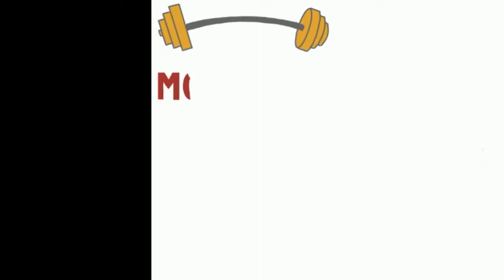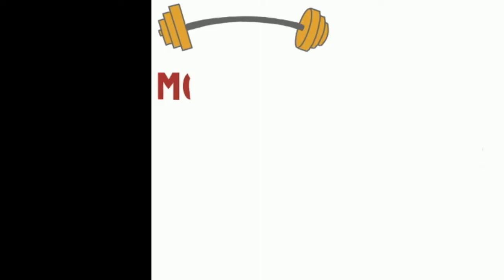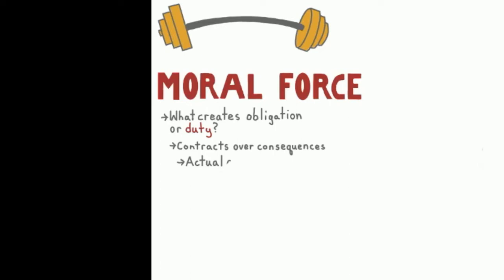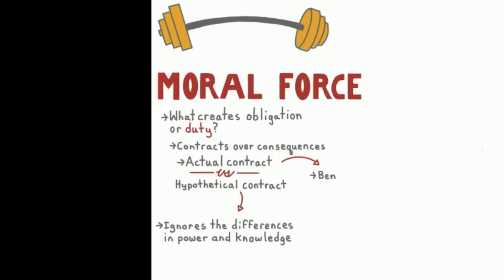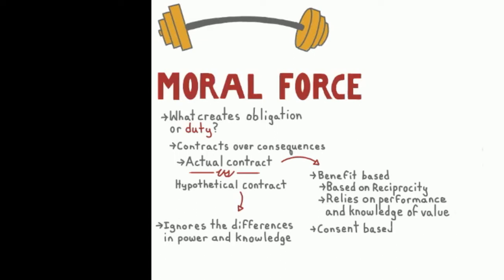The moral force behind the principles in A Theory of Justice are based on a hypothetical contract. By emphasizing contracts over consequences, the theory tries to avoid the moral dilemma of treating moral agents as a means to an end. Instead of using the model of an actual contract, like the United States Constitution, the theory uses the concept of a hypothetical contract, which is more resistant to the exploitation of knowledge and bargaining power.